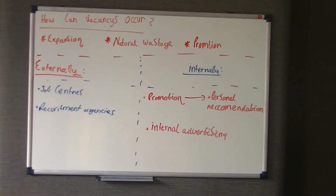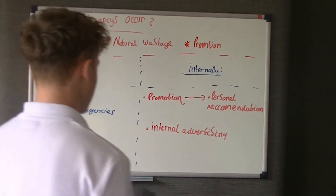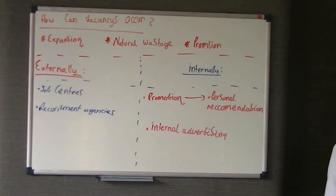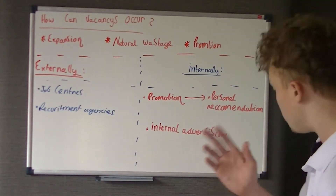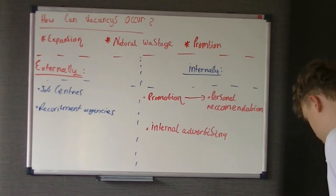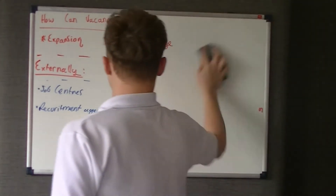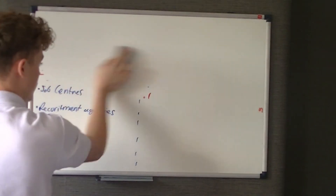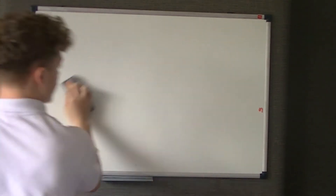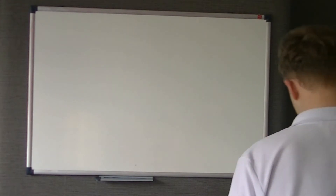So that's recruiting internally and externally, the advantages, and how vacancies can occur. I'll just give you a minute to copy that down. What we're going to do now is go through a few examples of selection and recruitment methods. I'm going to look through the book for most of them - you only need to know one or two, they're not going to ask you for all eight or nine of them.